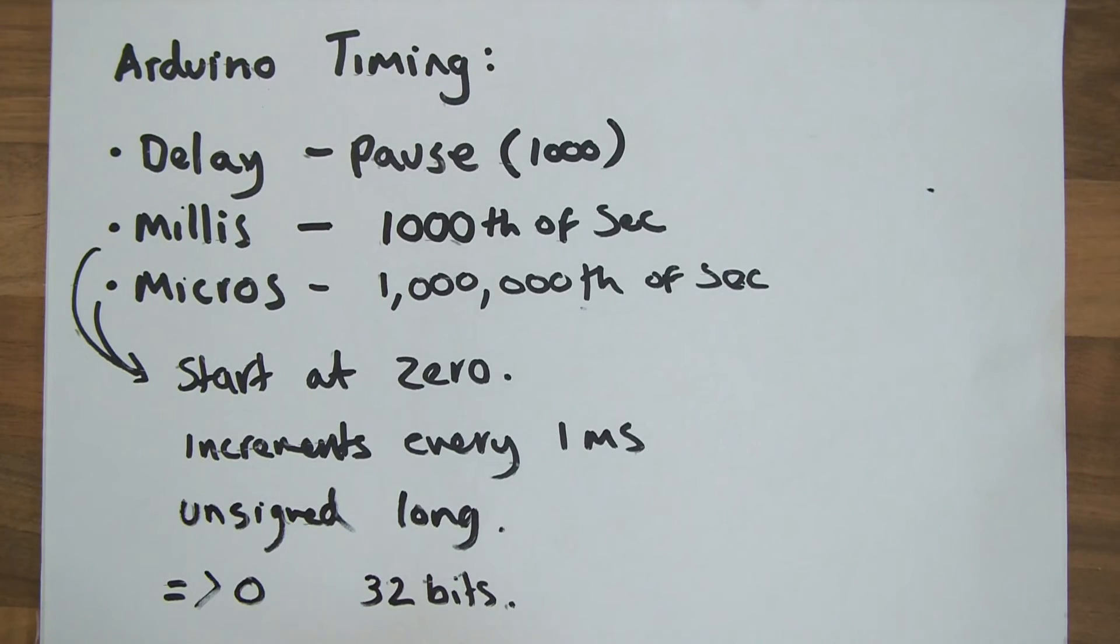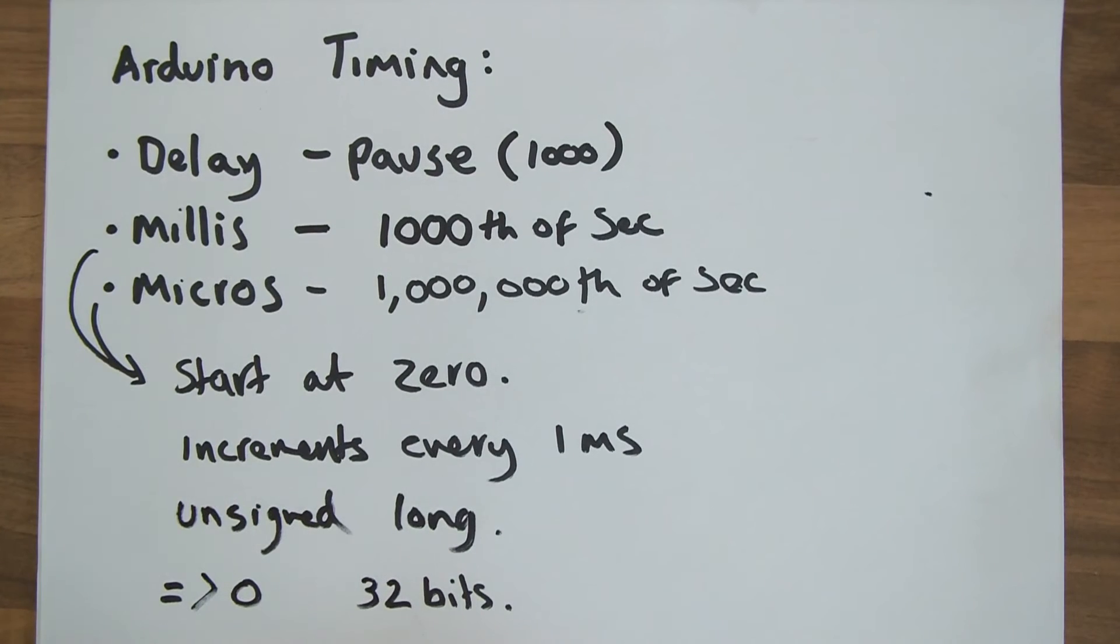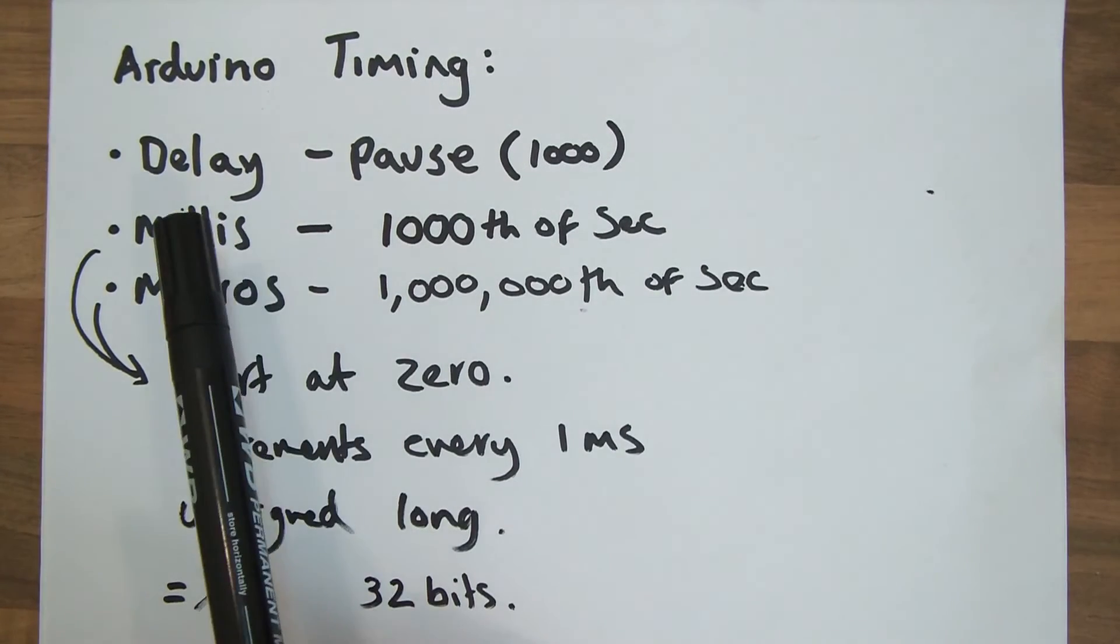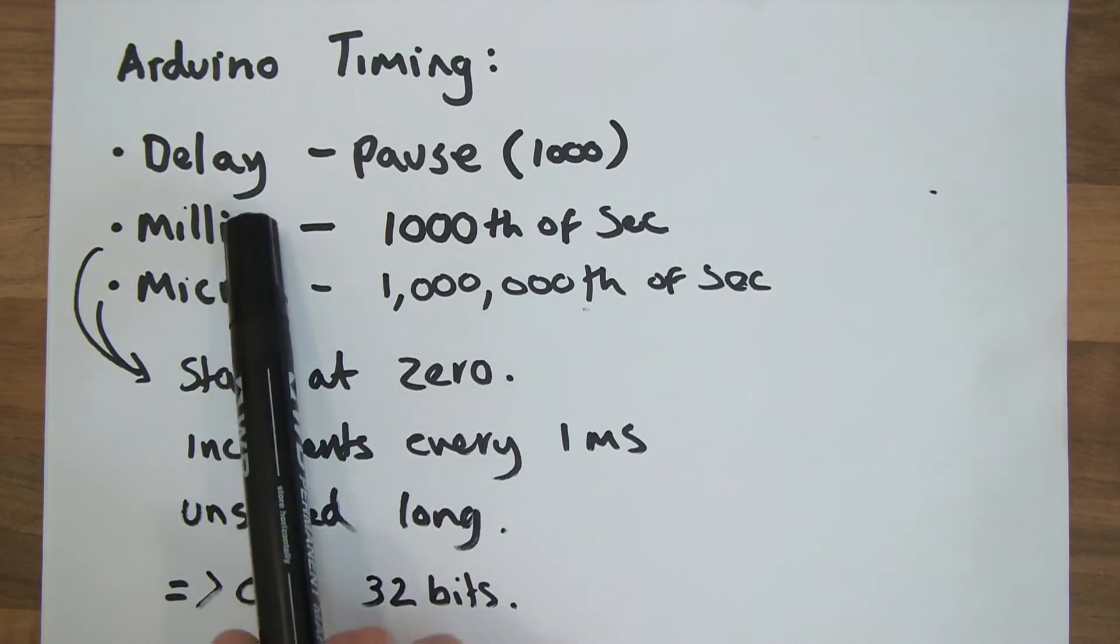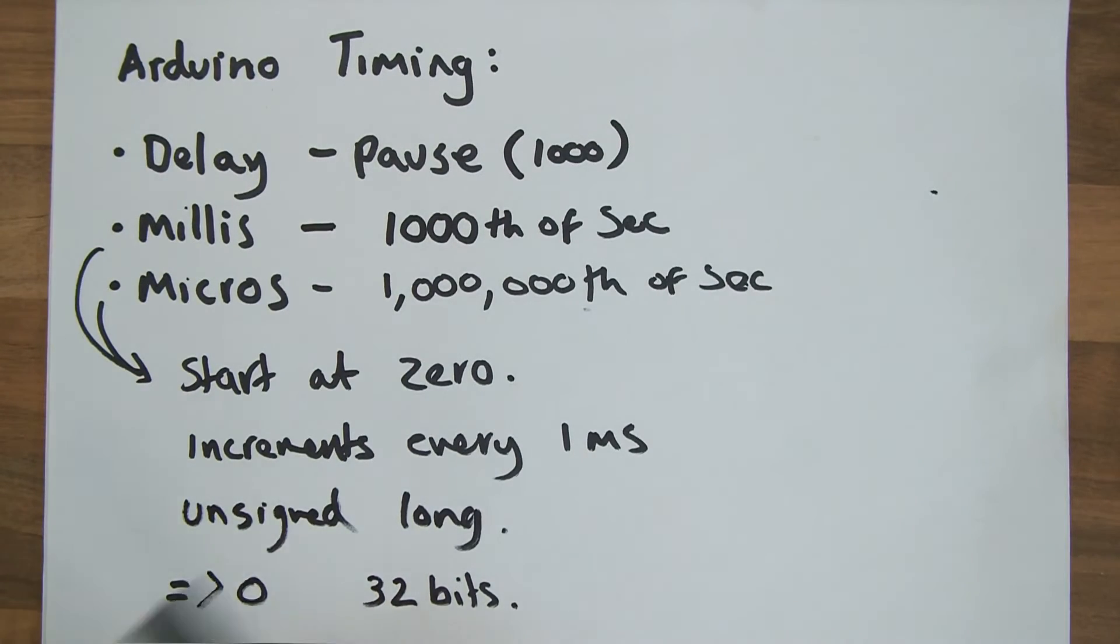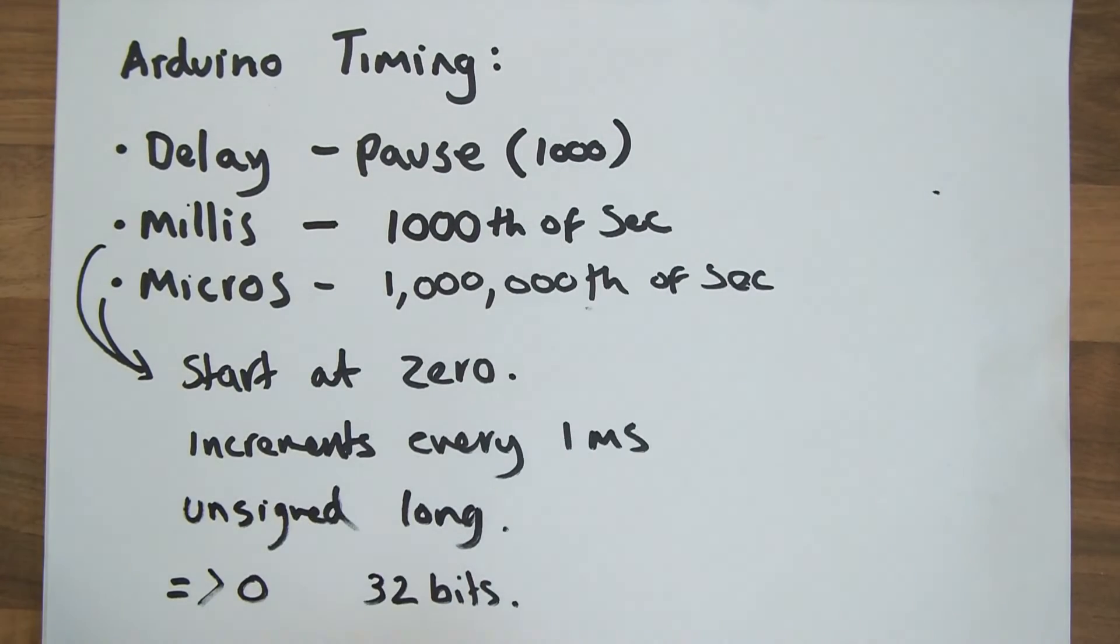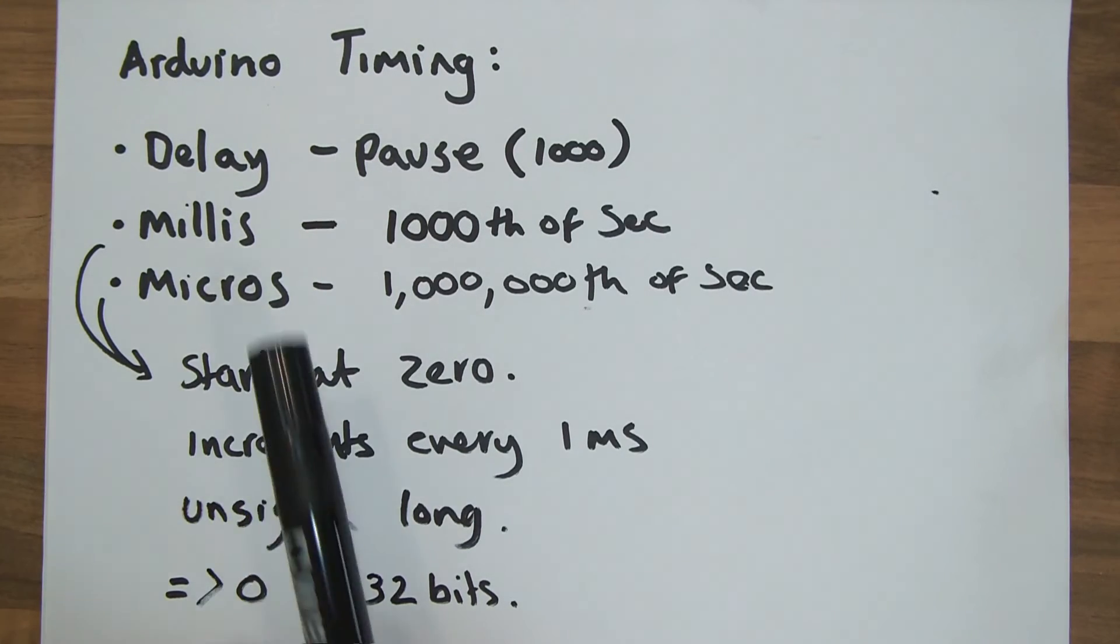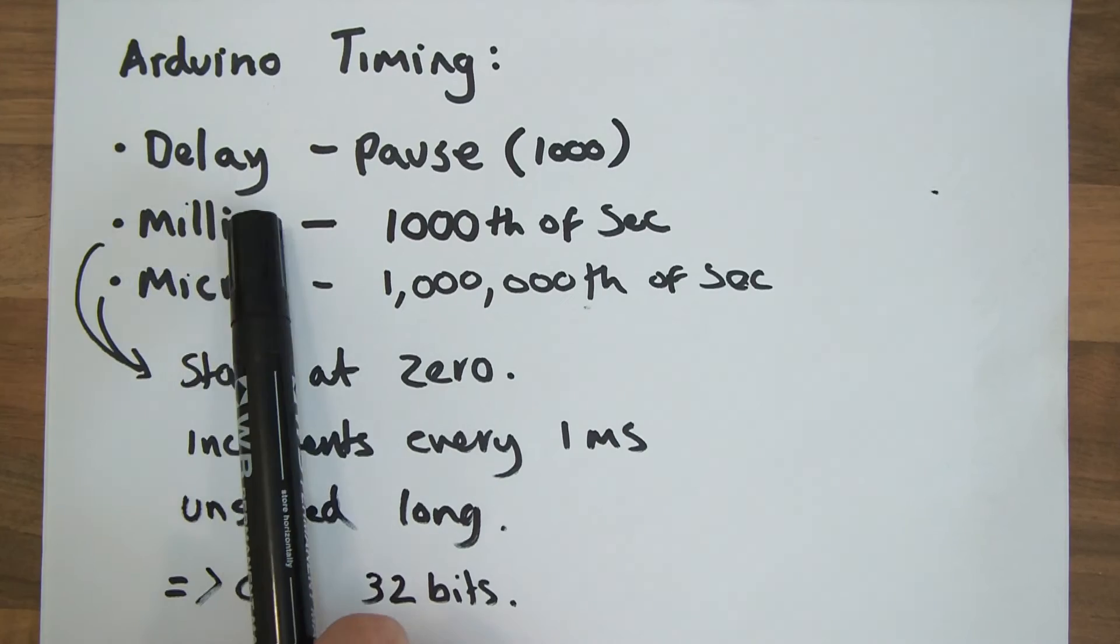So now how do we use it? Right, so I'm not going to go into micros anymore. I'm going to leave micros at that. But basically, micros and millis, you use them the same way and they do pretty much the same thing, only they have different levels of precision according to time. But I'm going to be focusing on millis.